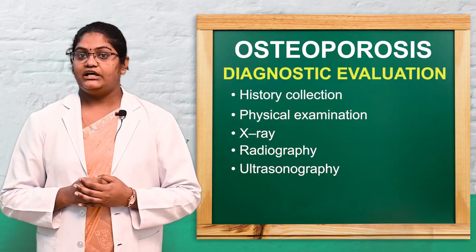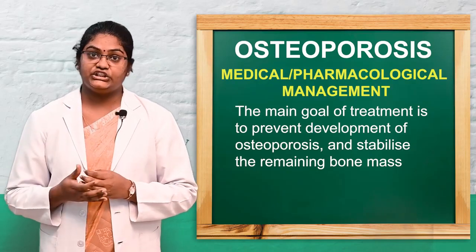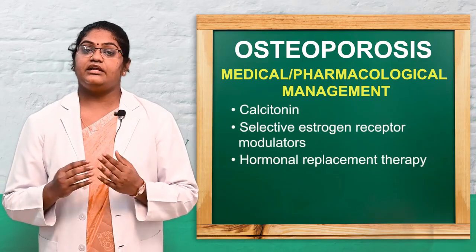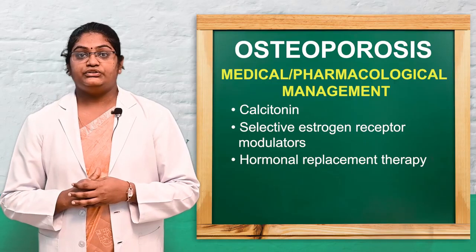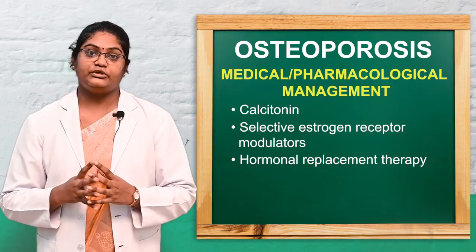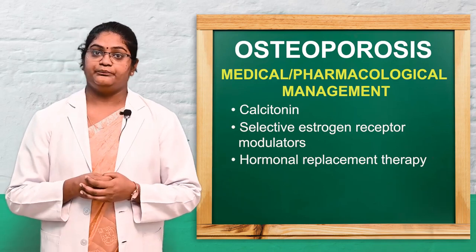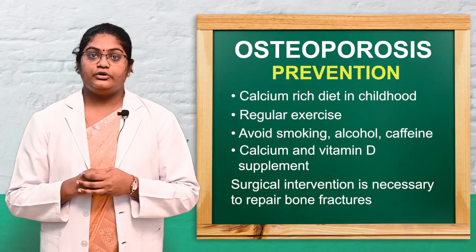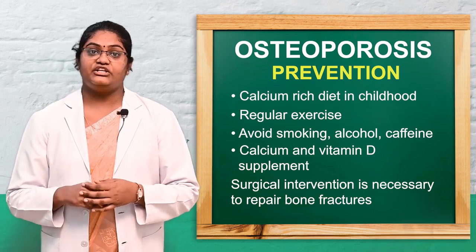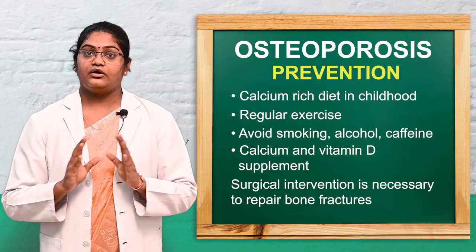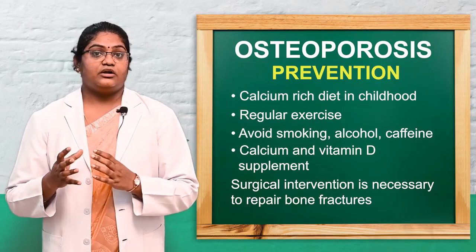After diagnostic evaluation, treatment should begin. The aim of management is to prevent further complications and treat osteoporosis. Pharmacological management includes calcitonin, hormonal replacement therapy, calcium supplements, and vitamin D supplements. If surgery is necessary due to fracture, surgical management is also an option. Prevention involves encouraging patients from childhood or adolescence to increase intake of calcium and vitamin D, engage in regular exercise, and avoid alcohol, smoking, and long-term use of corticosteroids.